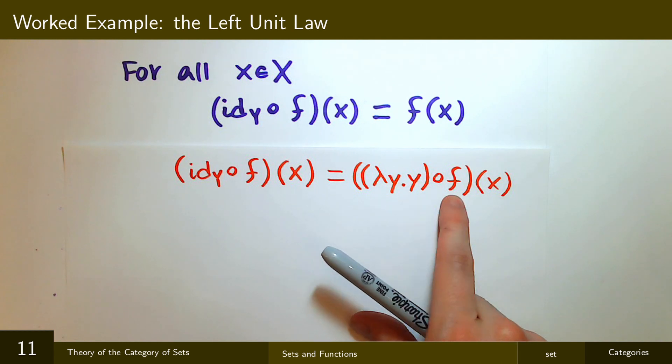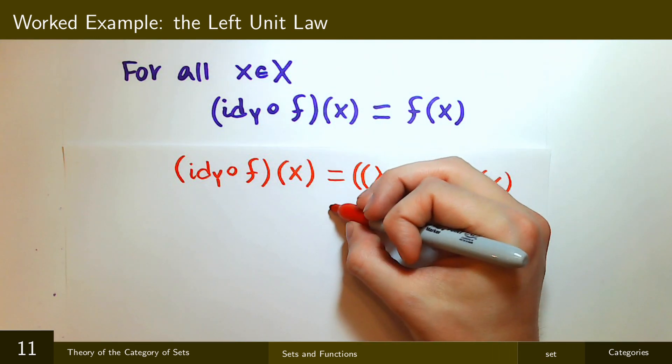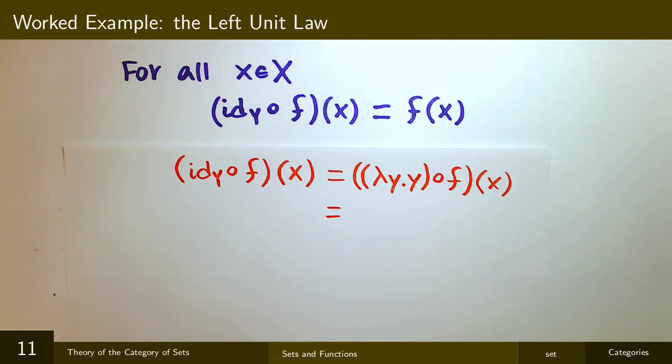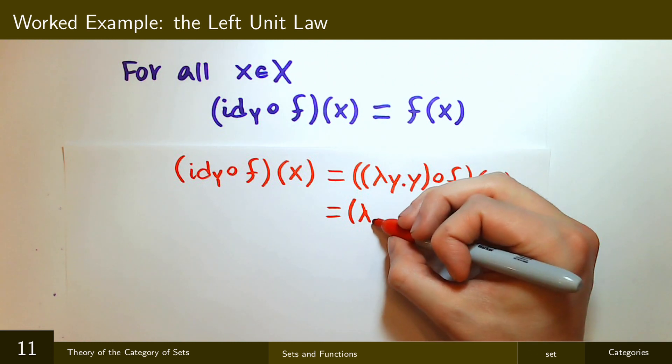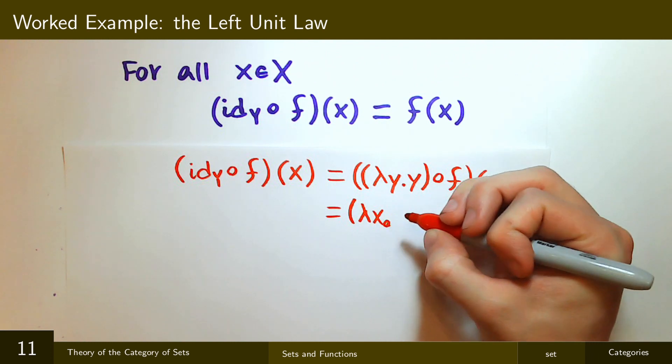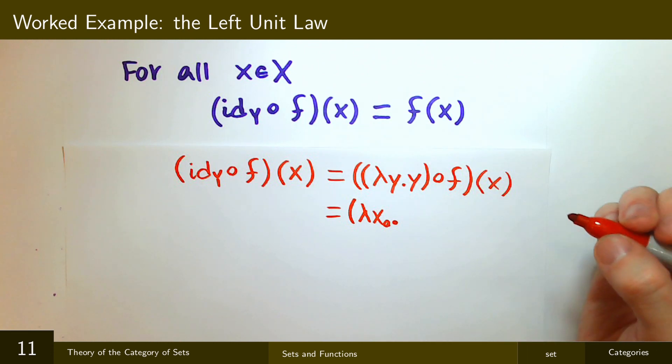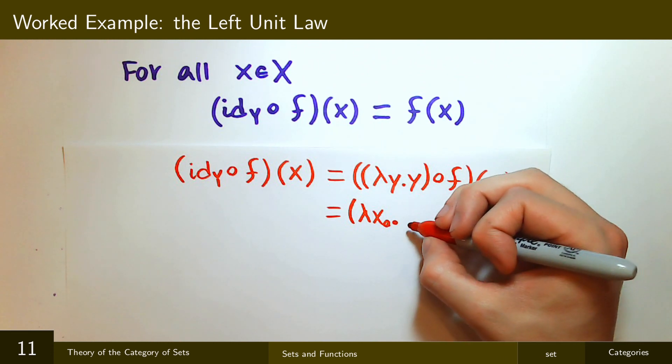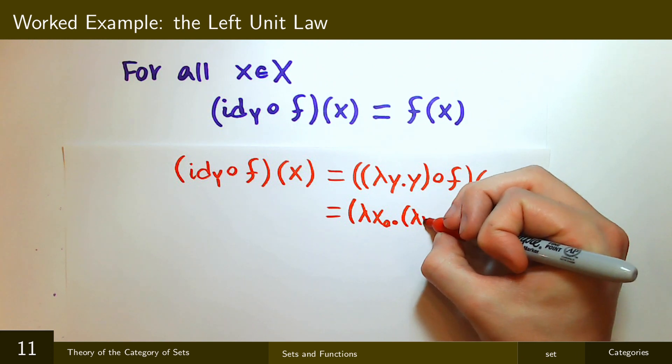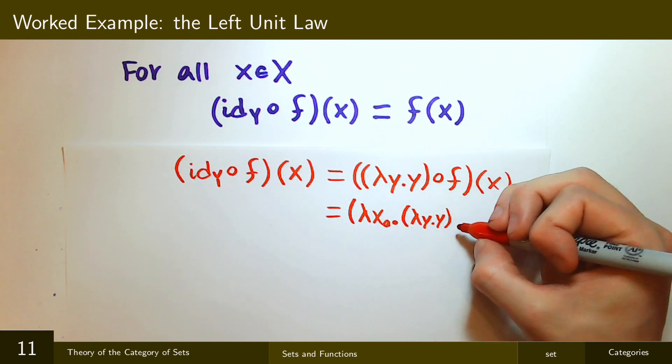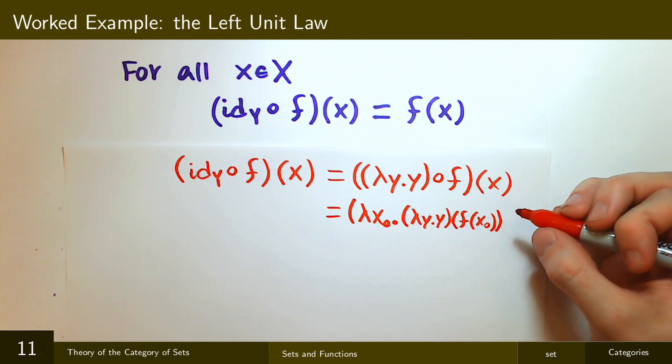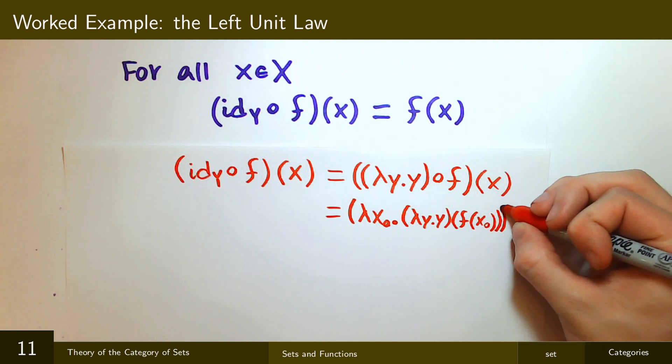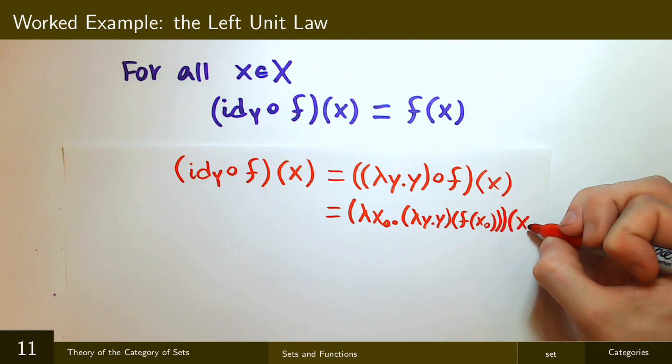Now let me expand out this composition. So this takes a, I'll call it x naught, and then it will apply lambda y dot y to f(x_0). And this is all applied to x.